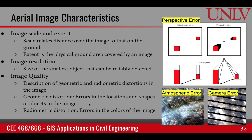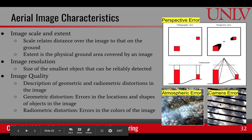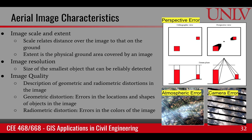Geometric distortions are errors in the locations and shapes of objects in the image. For example, if we were looking at an orthographic view where the source is at infinity, we should see buildings only as their footprints. But because of aerial imagery, the view is perspective, so we see the sides of buildings — this introduces a geometric error that needs to be corrected. Similarly, there can be radiometric distortions, which are errors in the colors of the image caused by intervening channels such as atmospheric effects or camera acquisition errors. In either case, these errors can impact the utility of an image.